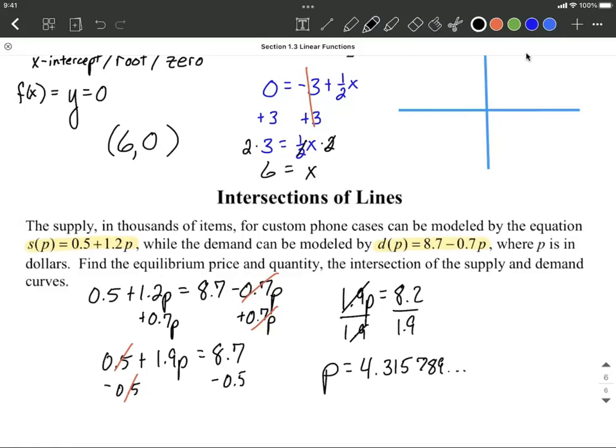Dot, dot, dot. Keeps going. If I were figuring out what should I be charging for these custom phone cases, I would round to two decimal places. So our price, p, would be, well, I'll use approximately 4.32 dollars.